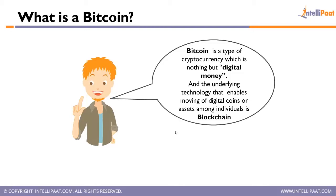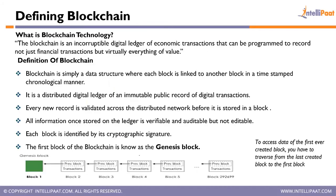Before defining blockchain, there is another concept called a distributed ledger. A distributed ledger is a type of data structure that resides across multiple computers — distributed means it exists on multiple computers, and ledger means it holds data. Blockchain is also a distributed ledger. It is an incorruptible digital ledger of economic transactions that can be programmed to record not just financial transactions but virtually everything of value.